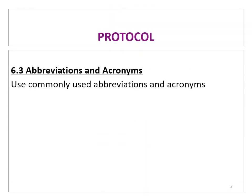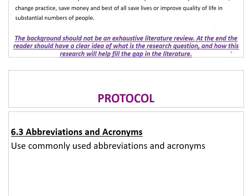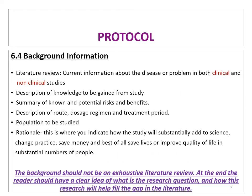Use commonly used abbreviations and acronyms and describe them in advance — and wherever they are used throughout each section, describe them again. The background section includes a literature review, current information about the disease or problem in both clinical and non-clinical studies, a description of knowledge to be gained, a summary of known and potential risks and benefits, a description of route, dosage, regimen and treatment period, and the population to be studied. This is where you indicate how the study will substantially add to science, change practice, save money, and save lives or improve quality of life. The background should not be an exhaustive literature review — the reader should have a clear idea of the research question and how the research will fill a gap in the literature.